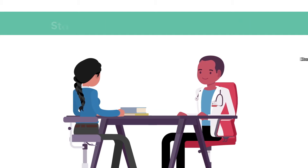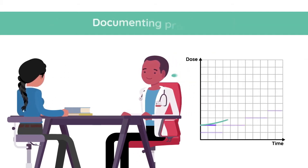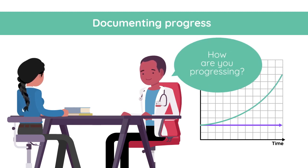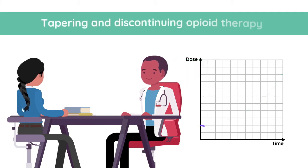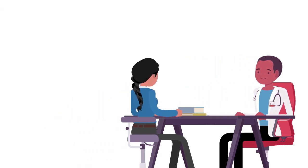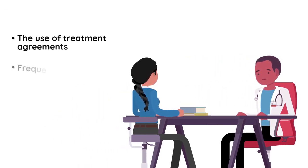When opioids are used, start with the lowest effective dose and titrate the dose slowly. Document progress toward established therapeutic outcomes and the need for continued treatment with opioids. Plan for the gradual tapering and careful discontinuation of opioid therapy. Medication misuse may be minimized through the use of treatment agreements.